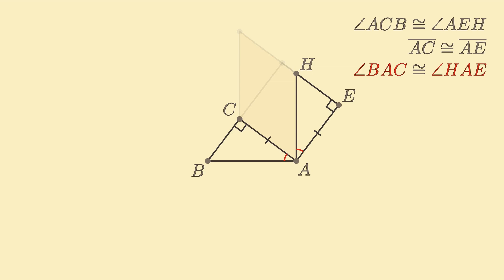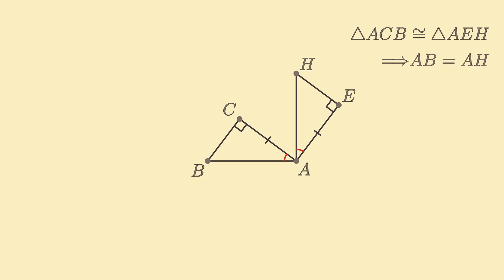Taking these facts together, we have thus shown that triangles ACB and AEH are congruent by angle-side-angle. It follows that BA has the same length as AH, so they both have length c.